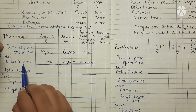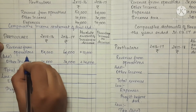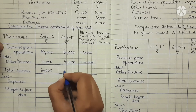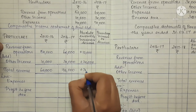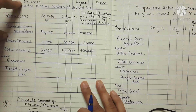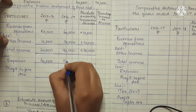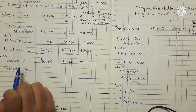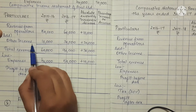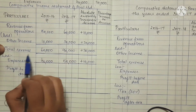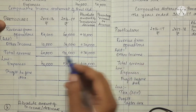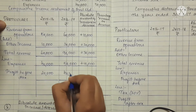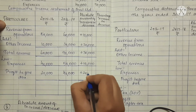Next, revenue from operations plus other income gives total revenue. So 60,000 plus 30,000 is 90,000 in the second year, compared to 60,000 in the first year — a difference of plus 30,000. Then we add expenses. Expenses are 40,000 and 50,000, a difference of plus 10,000. Total revenue minus expenses gives us our result.